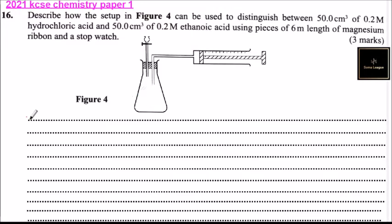To do that, you put 6 cm of magnesium in the conical flask and add 50 cm³ of HCl or hydrochloric acid. Using a stopwatch,